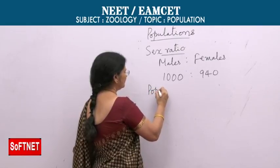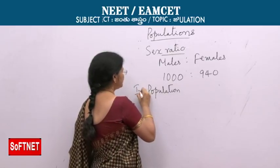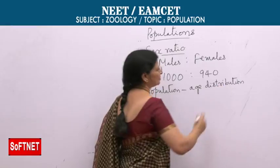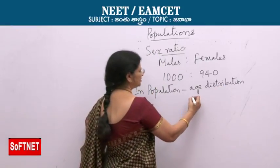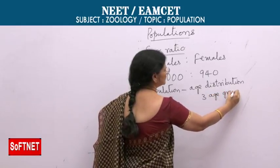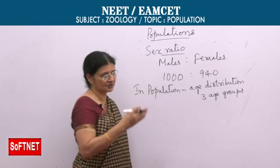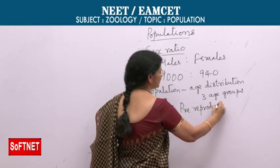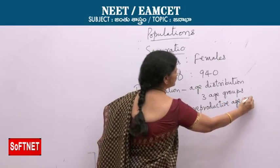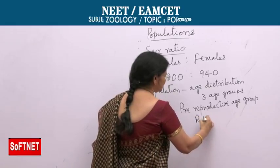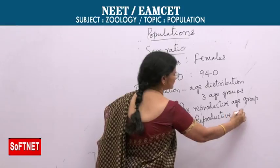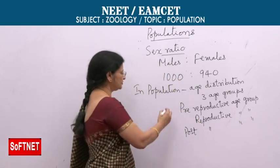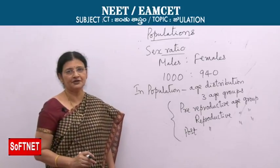Another important population attribute is age distribution. In every population there are 3 age groups: the pre-reproductive age group, that is young individuals; the reproductive age group, that is mature individuals; and the post-reproductive age group, that is older individuals. These 3 age groups are generally found in a population.